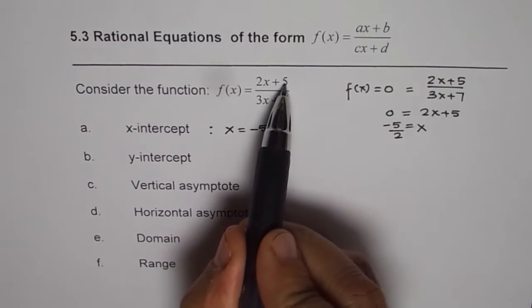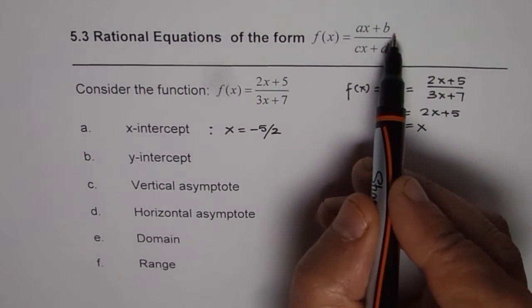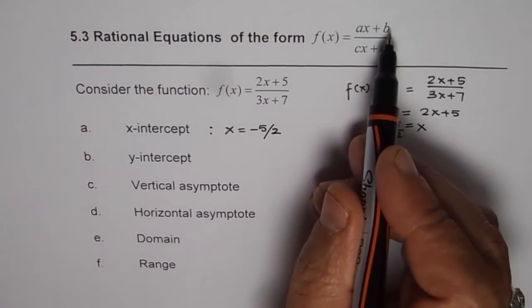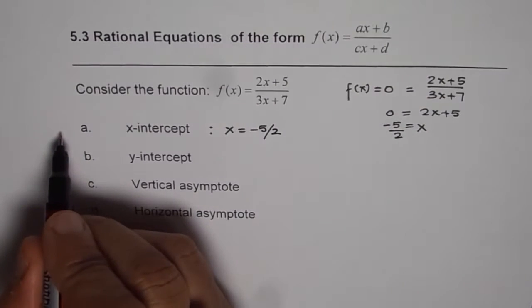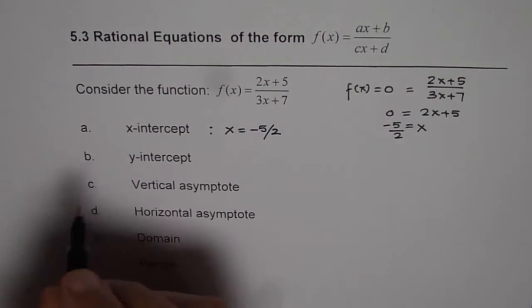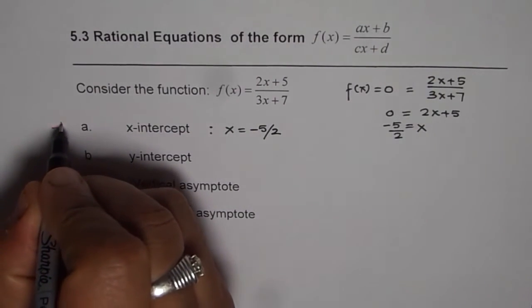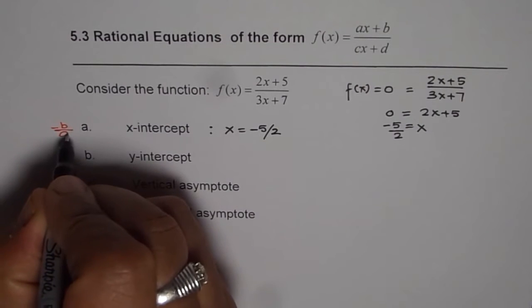So that is this value, minus 5 over 2. That is what we get. Now general solution will be, if I am using ax plus b, then as you can see, 5 is the b value. So let me write the general solutions on the left side for each one of them. So it is minus b by a. So x-intercept is minus b by a.